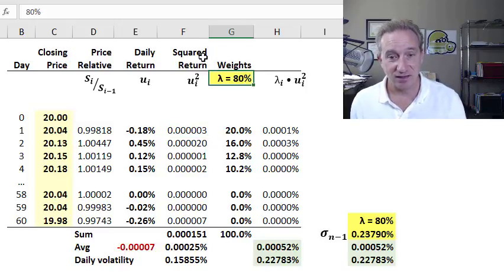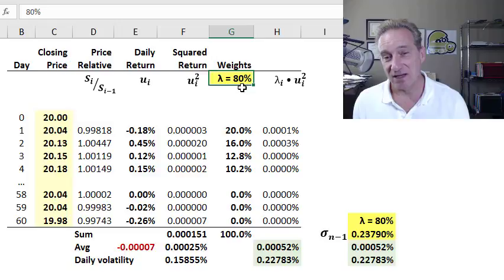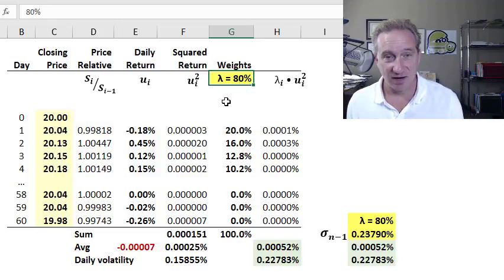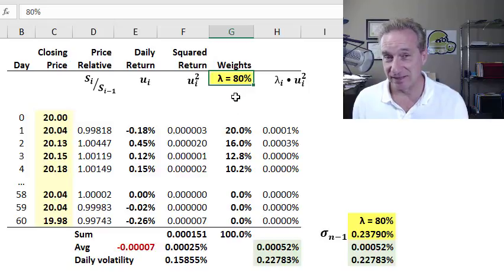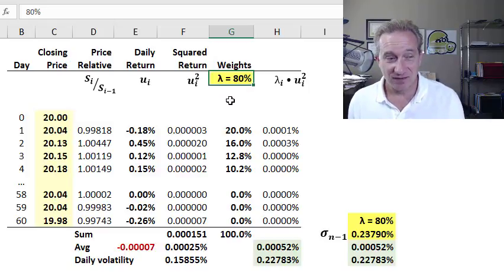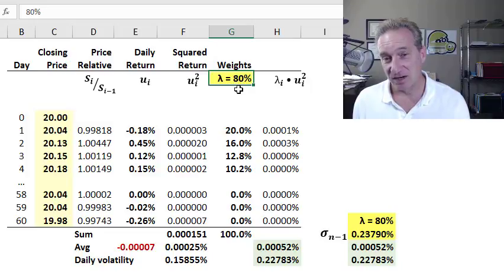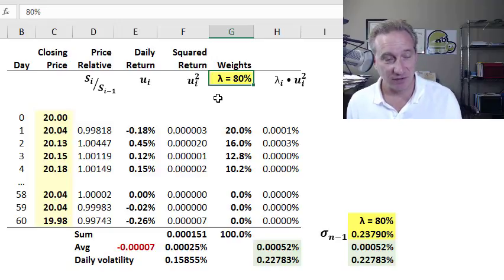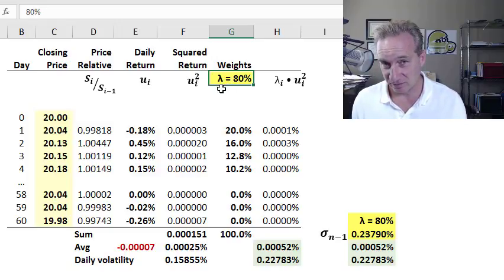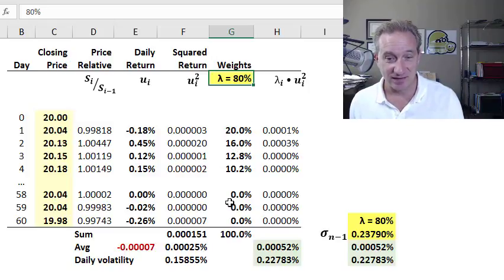It does this elegantly with a single parameter almost always denoted with lambda. So I'm using lambda of 80% or 0.8. Oftentimes we're asked what's a good way to calibrate it or what's a common level. We know that lambdas usually are at least 80%, oftentimes 85% or greater, sometimes 94%. So we usually see pretty high lambda. It's also called a smoothing parameter or a persistence parameter. I'm using 80%, which is on the lower end of the typical ranges, only because I get clean numbers here.